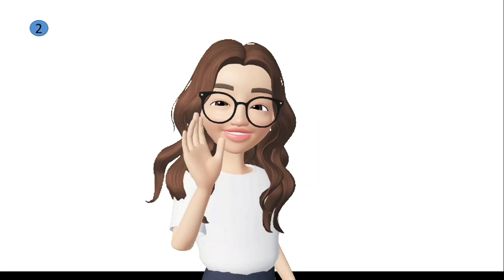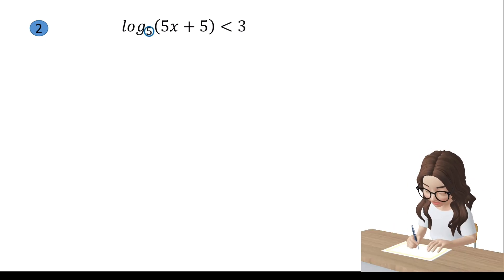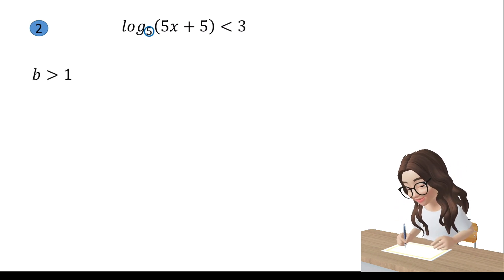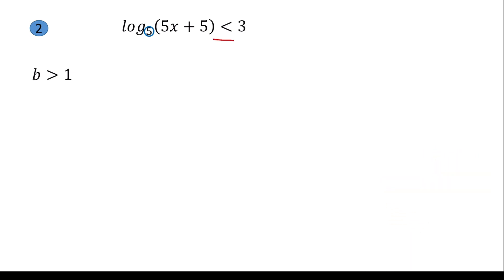Let us proceed to example number 2. We have: logarithm of (5x + 5) with base 5 is less than 3. First, identify the base: we have 5, and since 5 is greater than 1, the inequality symbol will remain throughout. Through the property of equality for logarithmic equations, the inequality becomes 5x + 5 < 5³.